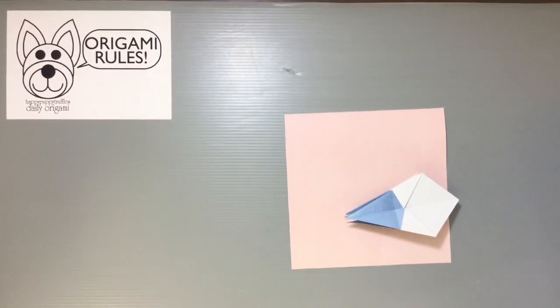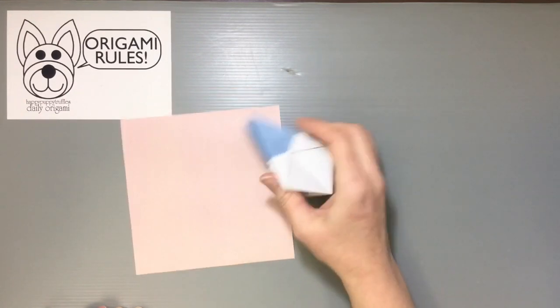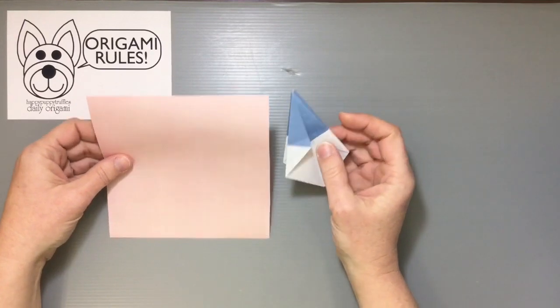The papers are all square and they're about 15 by 15 centimeters.